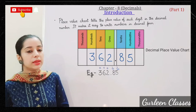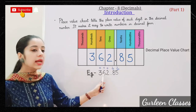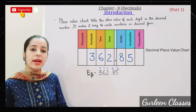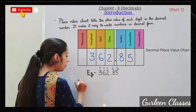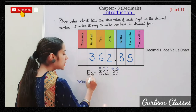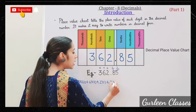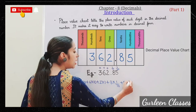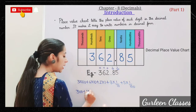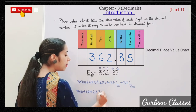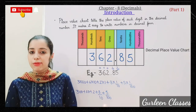Let us take an example: 362.85. The places are hundreds, tens, ones, then decimal point, tenths, hundredths. In expanded form: 3 is in the hundreds place, so 3 × 100; plus 6 in the tens place, so 60; plus 2 in the ones place; plus 8 in the tenths place, so 8/10; plus 5 in the hundredths place, so 5/100. Therefore 362.85 = 300 + 60 + 2 + 8/10 + 5/100.